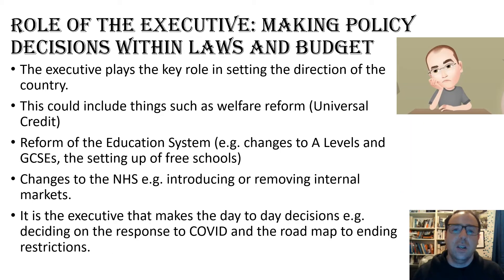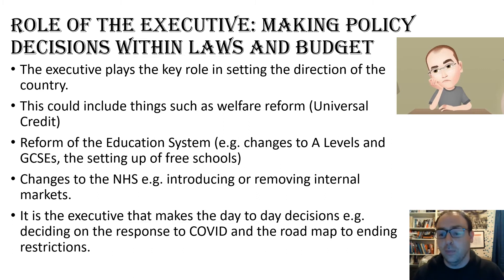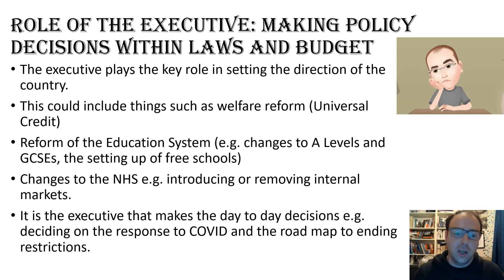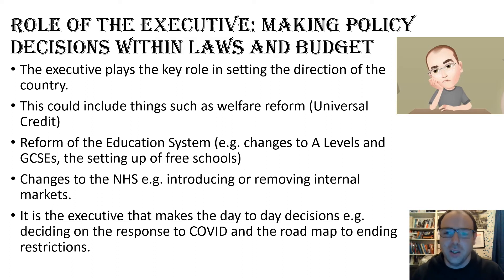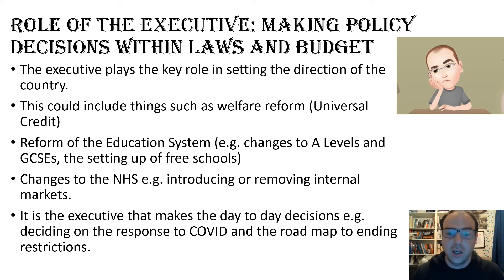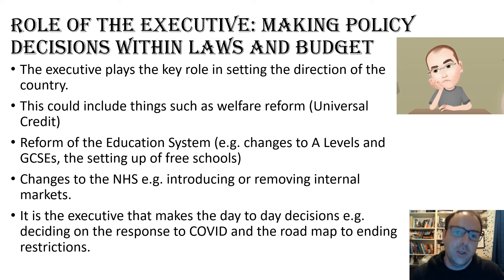Another part of the executive's role is making policy decisions within laws and budget — this is about the direction the government chooses to take the country in. This includes things like reforming the welfare system through universal credit, changes to A-levels and GCSEs, setting up free schools, and changes to the NHS such as introducing or removing internal markets. These are the day-to-day decisions in running the country — parliament makes the big laws, but the executive handles the nitty-gritty, including responses to crises like COVID-19.